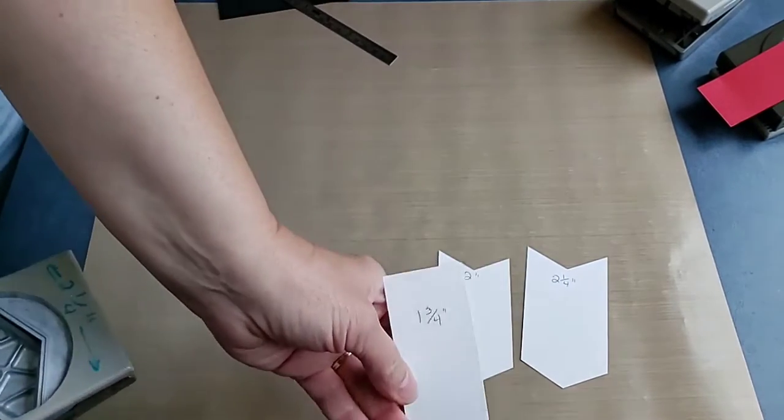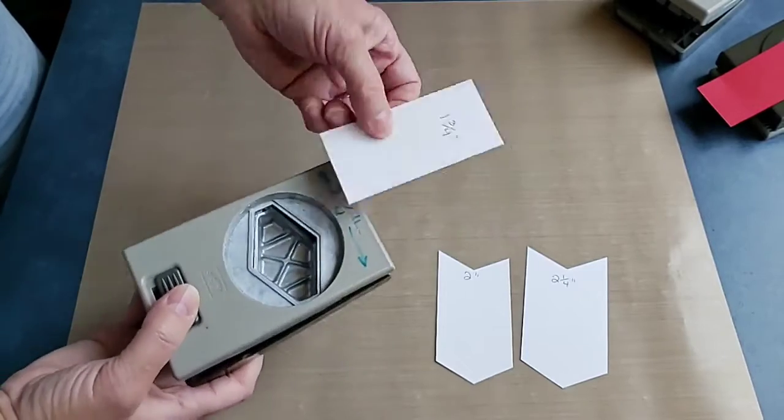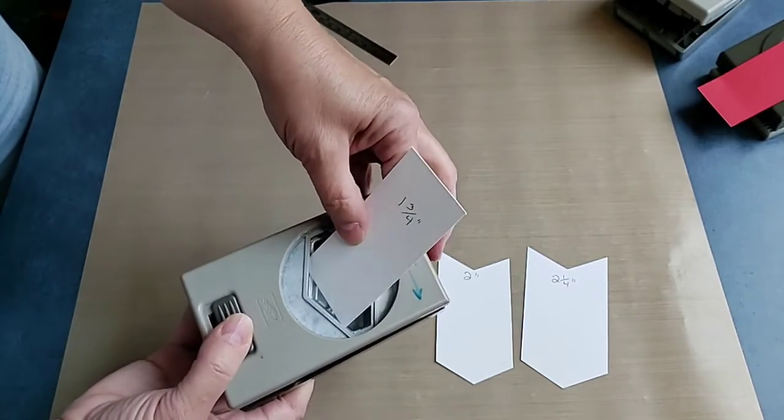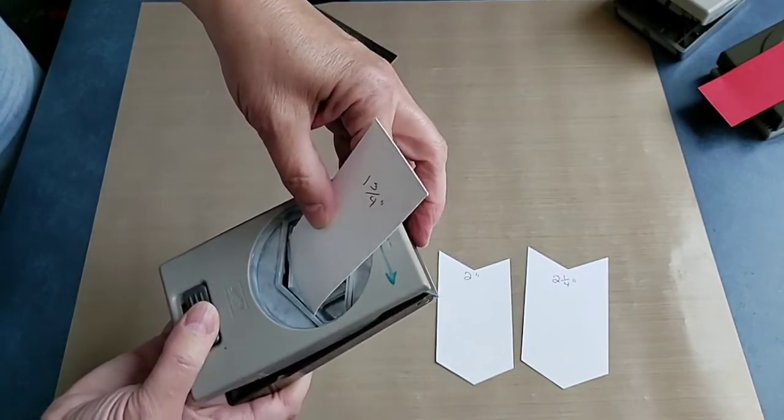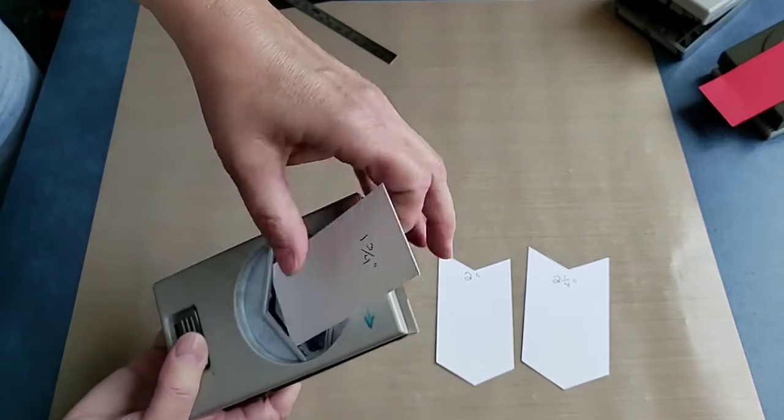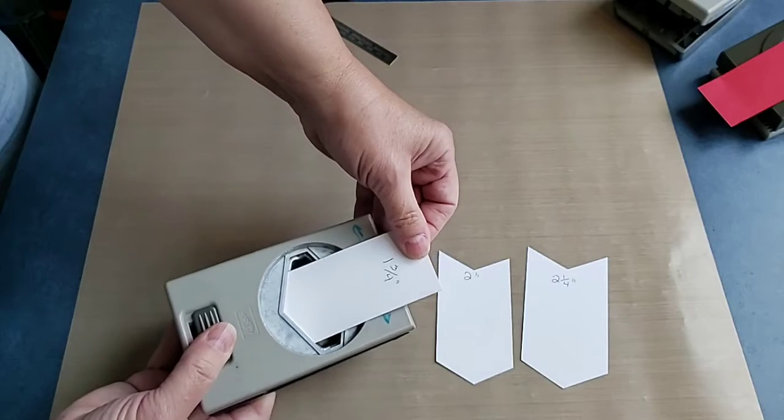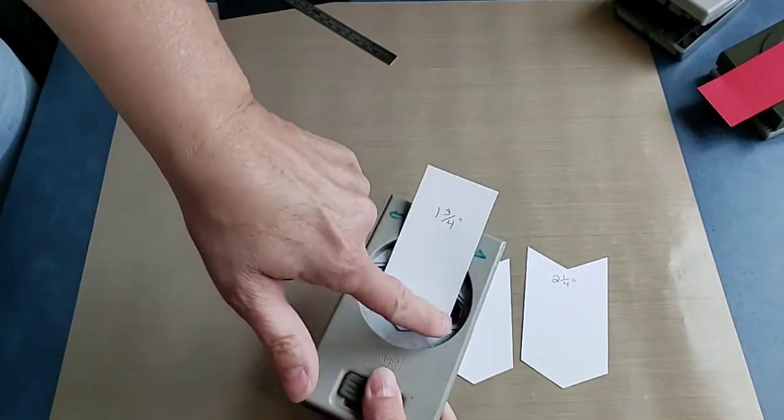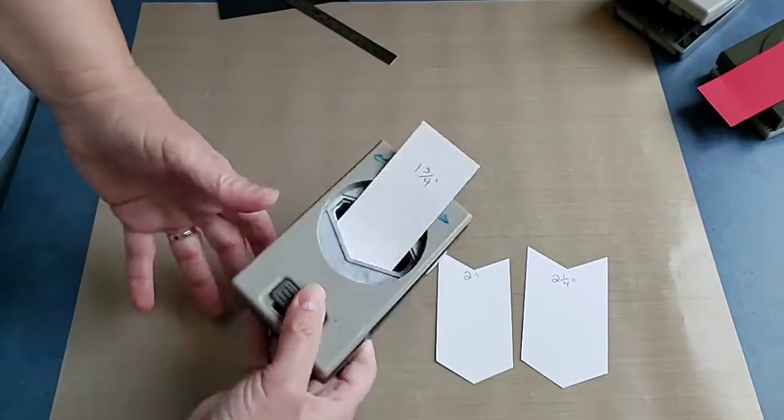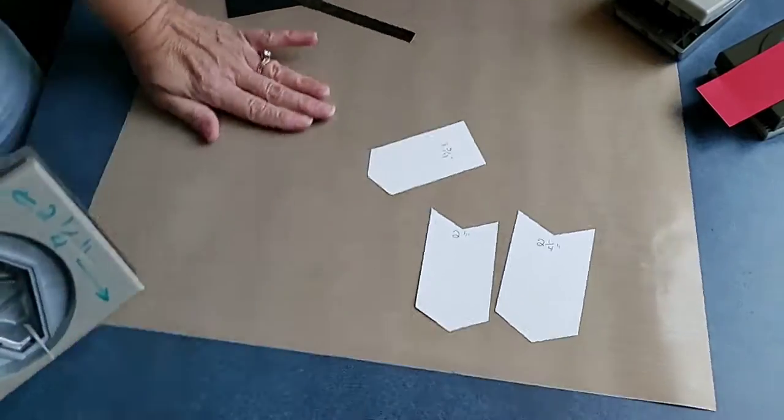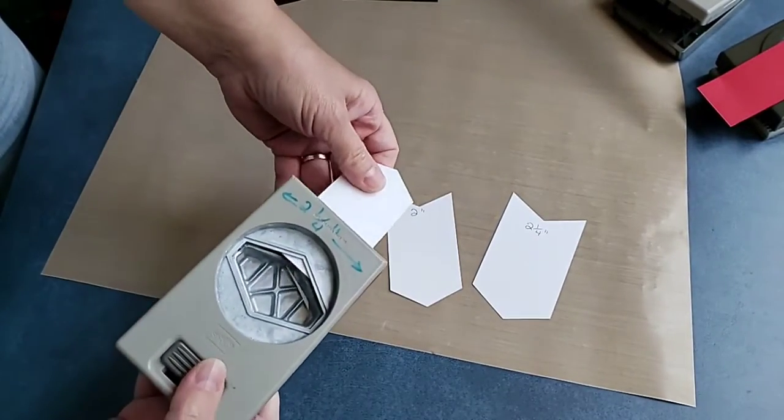Again, here's a piece that's one and three quarters. Will be consistent. You can do the point end if I can get it in there. You just want to feed your cardstock in between those layers where you know it's going to punch. I'm going to center it between here and here. That's pretty close.